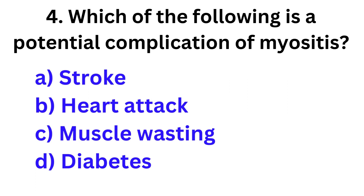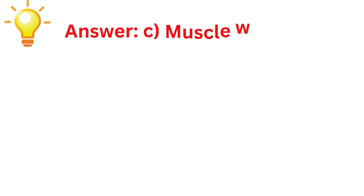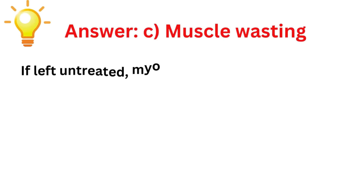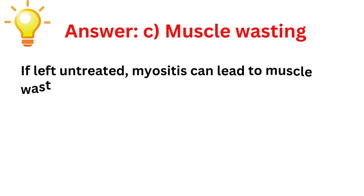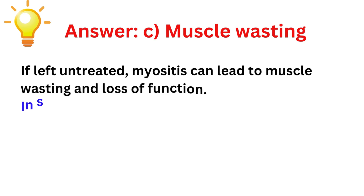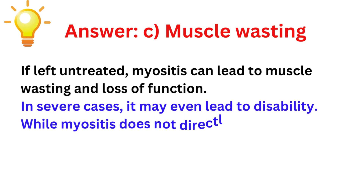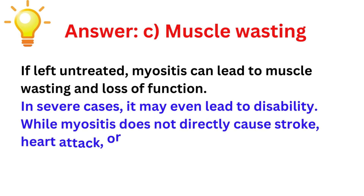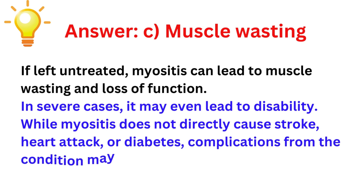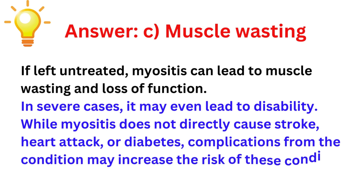Next question: Which of the following is a potential complication of myositis? Options: stroke, heart attack, muscle wasting, diabetes. Correct answer is muscle wasting. If myositis is left untreated, it can lead to muscle wasting and loss of function. In severe cases it may even lead to disability. While myositis does not directly cause stroke, heart attack, or diabetes, complications from the condition may increase the risk for these conditions.